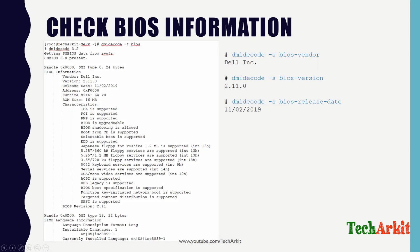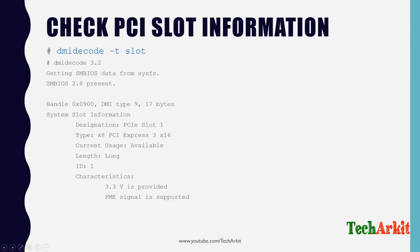To see the PCI slots available in your system, you can use the dmidecode command for slots. This shows the form factor of each slot — for example, a slot may have a form factor of 3x16. You can see PCI slot 1 is type X8, PCI Express 3, with form factor X16. This gives you a clear view of how many PCI slots are on the motherboard and their specifications.